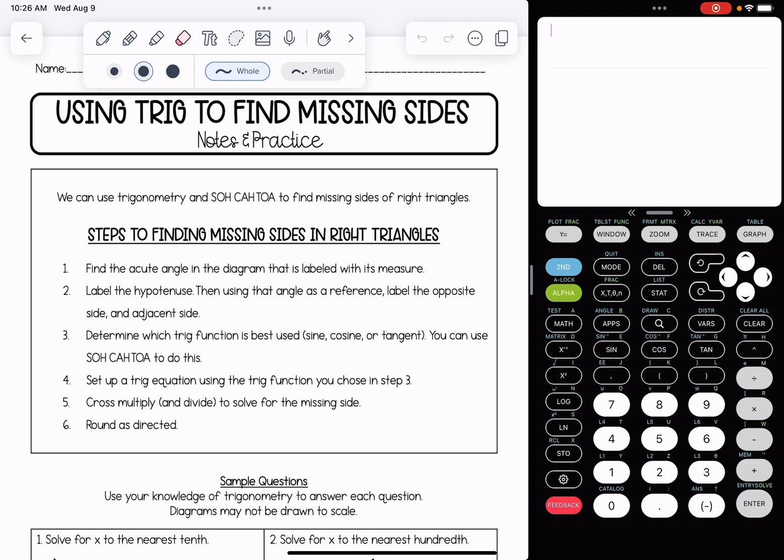Then determine which trig function is best used, using SOHCAHTOA to determine that. Set up your trig equation, cross multiply and divide to solve, and round accordingly.